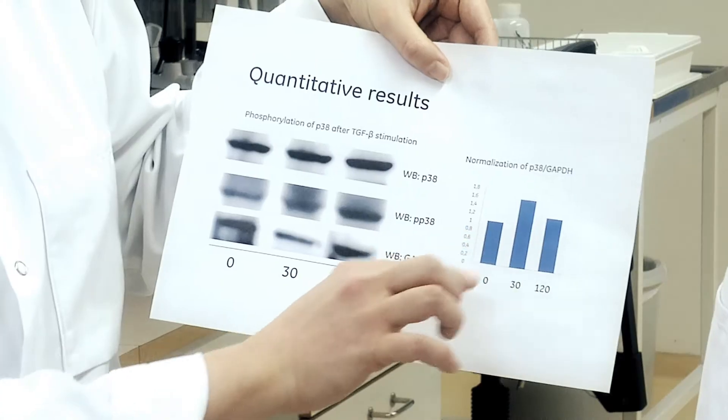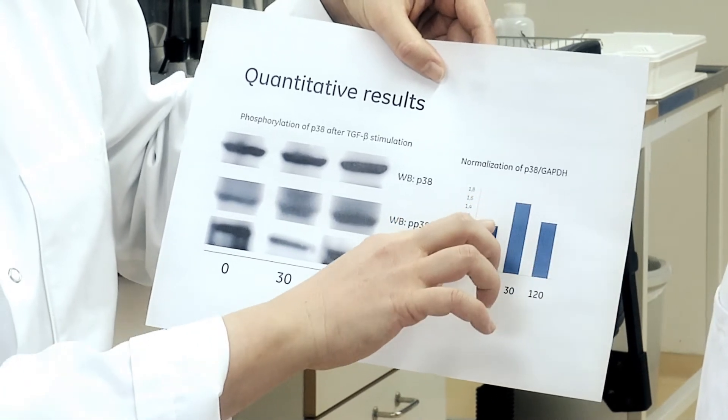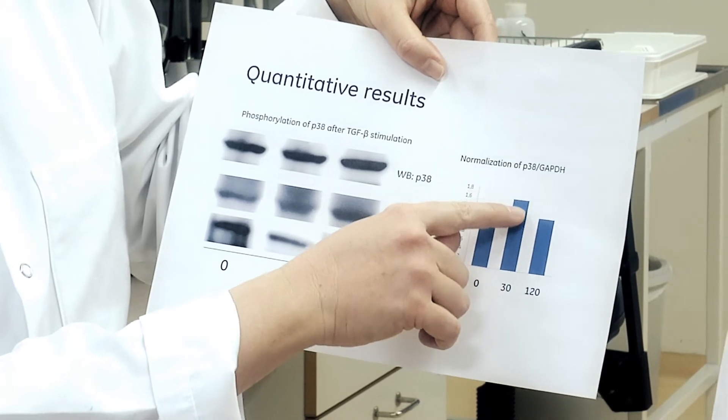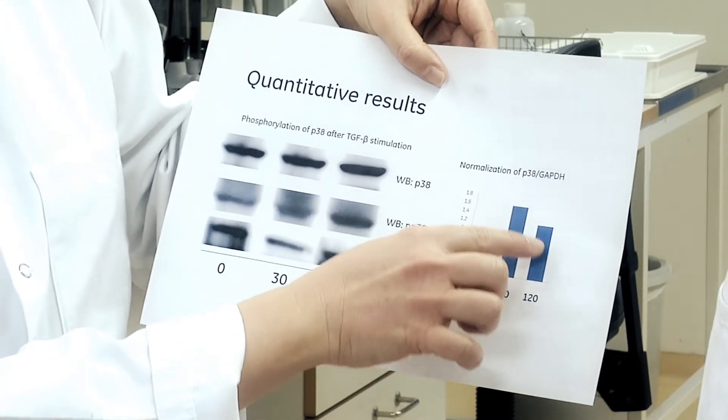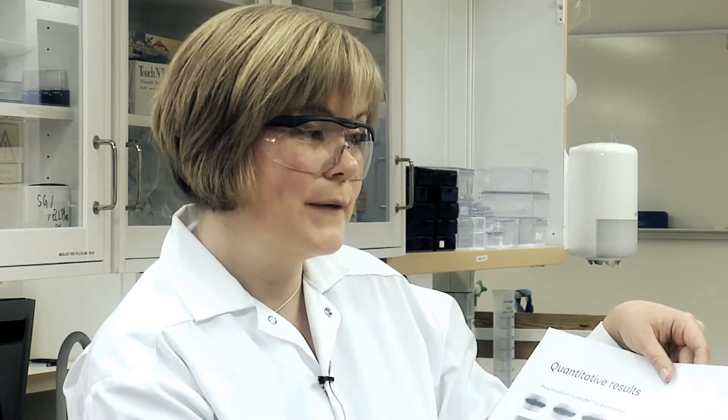And quantitative Western blotting — here's another application. Here I have stimulated this protein with a growth hormone over time. You can see here on the signals that the signal has increased after 30 minutes, about 60%, and then it declines with about 25% for the rest of the experiment — two hours. So that's quantitative Western blotting.